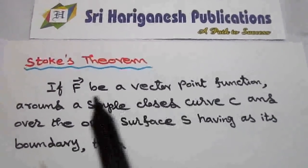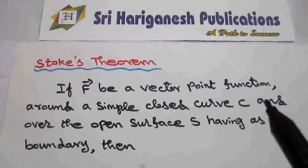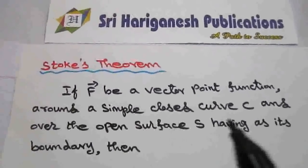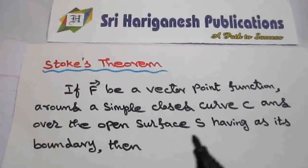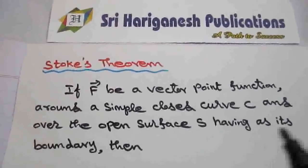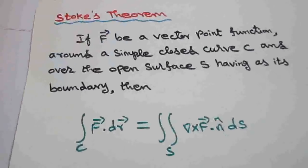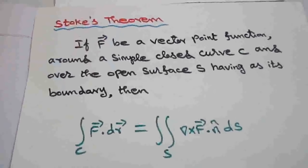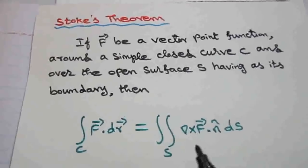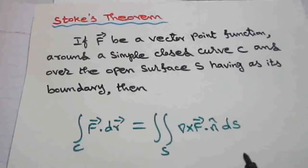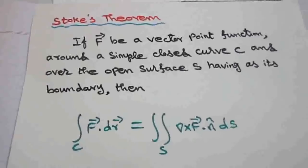Stokes Theorem: If F vector is a vector point function around a simple closed curve C and over the open surface S having C as its boundary, then the line integral over C of F·dr is equal to the double integral over S of (del cross F)·n dS. This is the statement of Stokes Theorem.